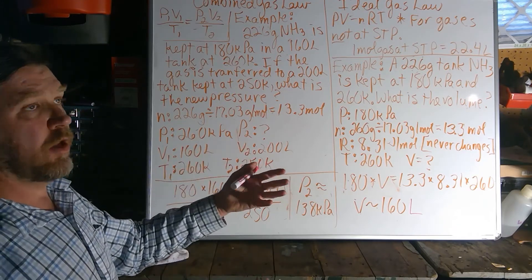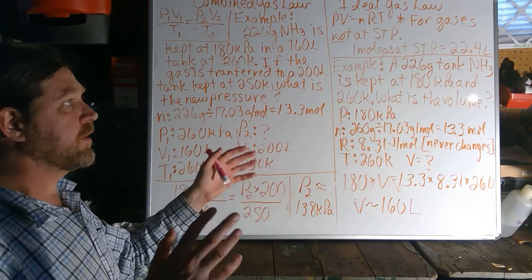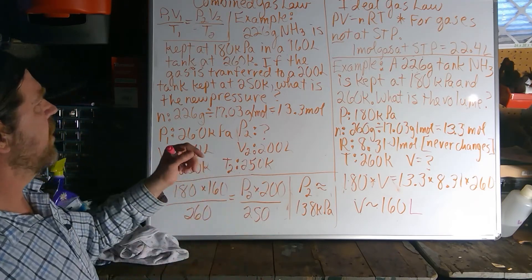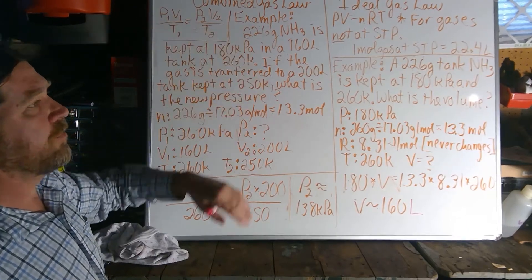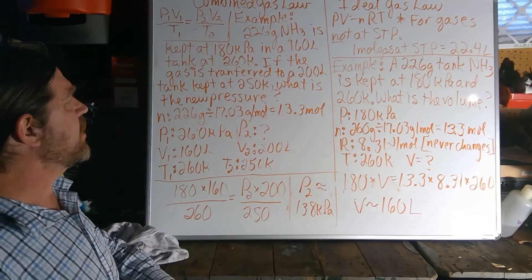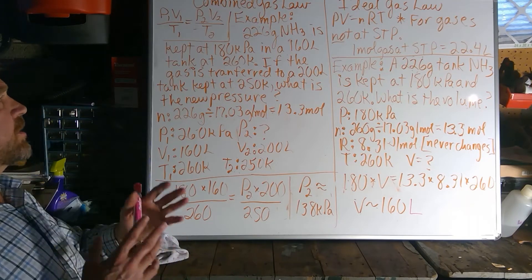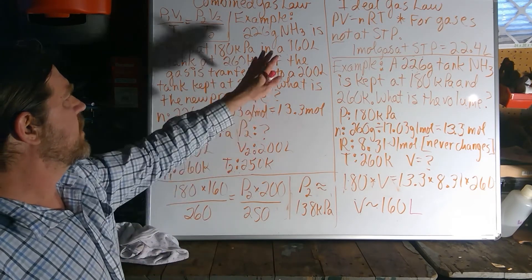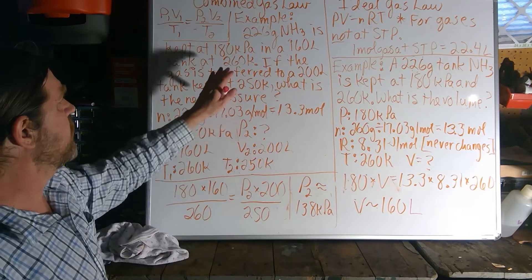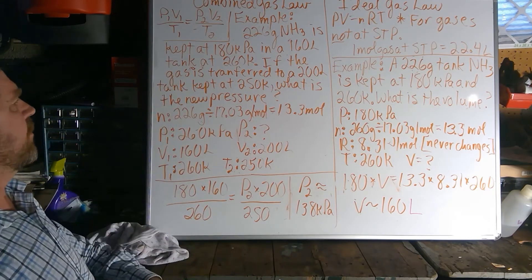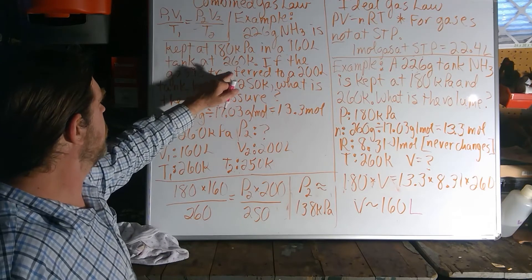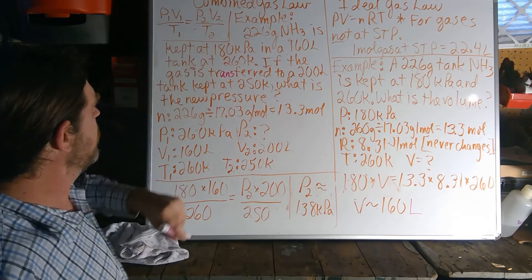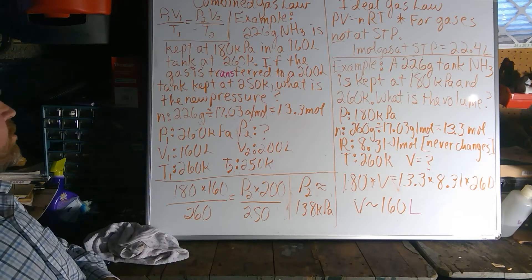We're just manipulating the pressure, temperature, and volume here. So we'll start off with sort of the same values that we had here. 226 grams of ammonia kept at 180 kilopascals in a 160 liter tank at 260 Kelvin. If the gas is transferred to a 200 liter tank kept at 250 K, what is the new pressure?